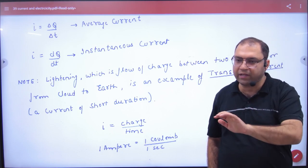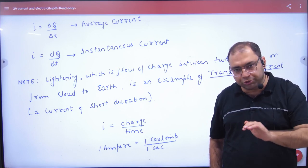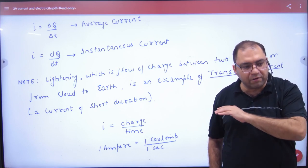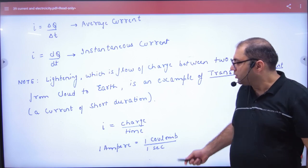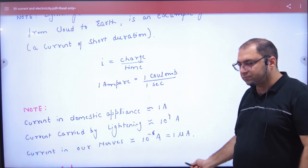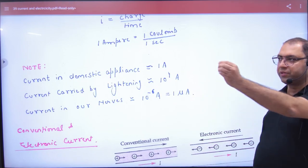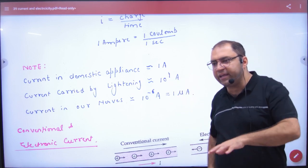In fraction of second, we do not study. We are doing wire current, which is small and which flows for very long time. So current is charge upon time. Current units are ampere. Current in domestic appliances, which we use in our homes.